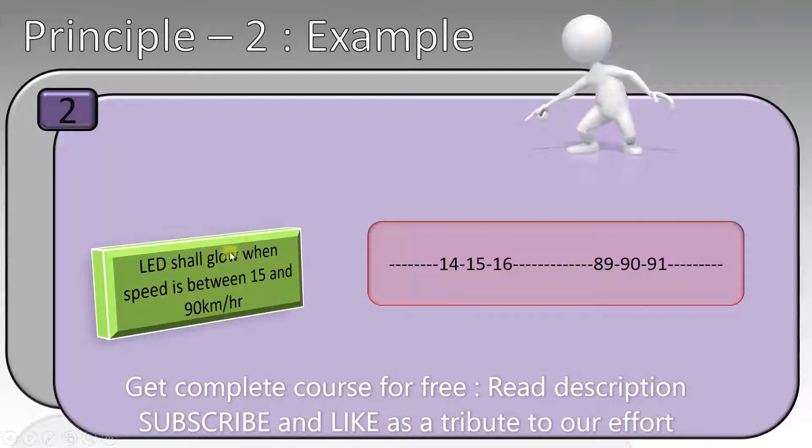But it is also possible to test with all the values between 15 and 90, but that will consume a lot of time and effort. Also, the boundary values serve our purpose. So this is the reason that we say that testing each and every part of the feature is not feasible.